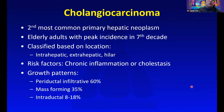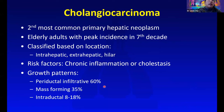Next, we'll talk about cholangiocarcinoma. It's the second most common primary hepatic neoplasm, usually found in older adults. It can be classified based on location into intra-hepatic, extra-hepatic, and hilar. The risk factors are chronic inflammation or cholestasis. It can have different growth patterns: periductal infiltrative, mass-forming, or intraductal.